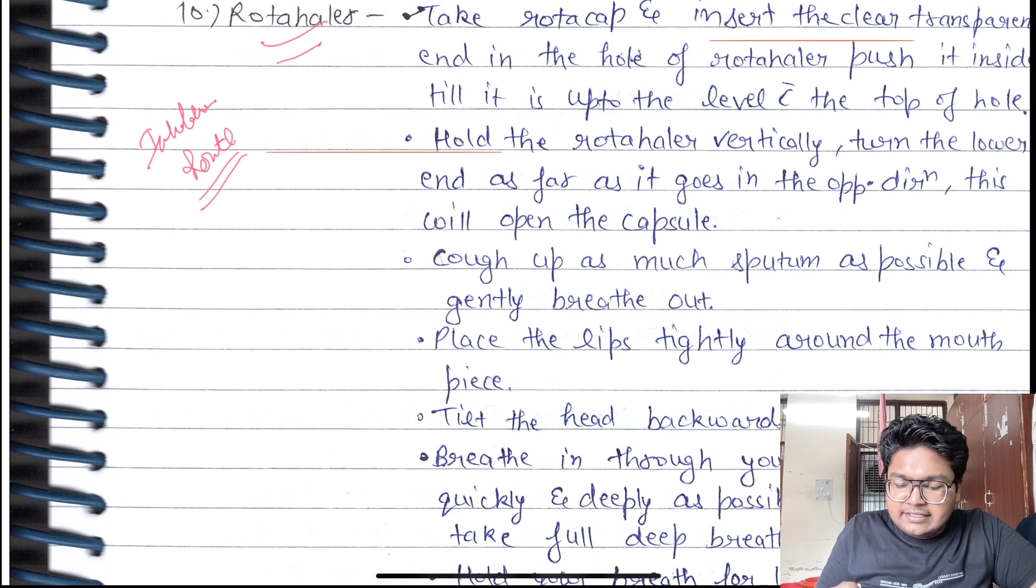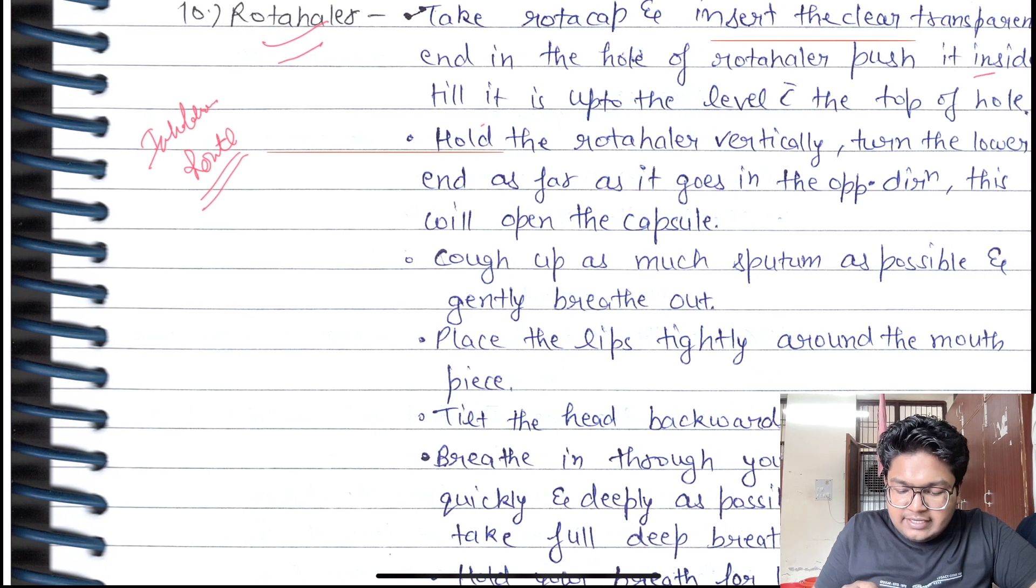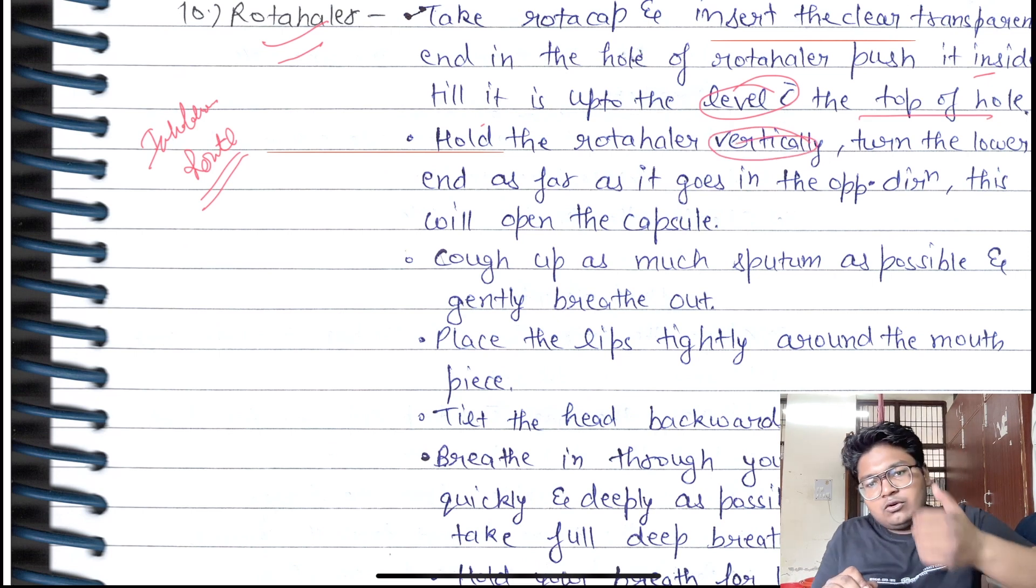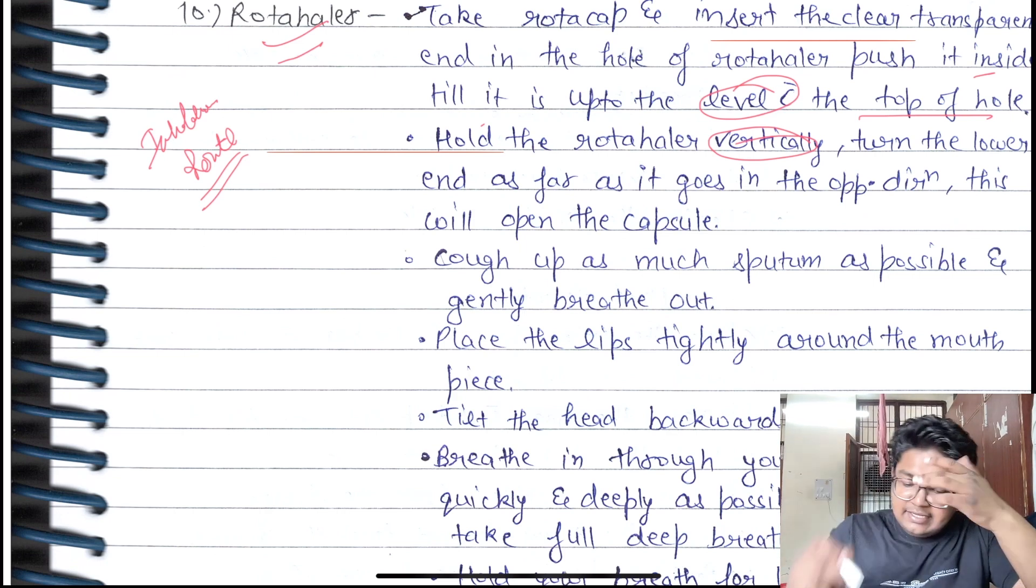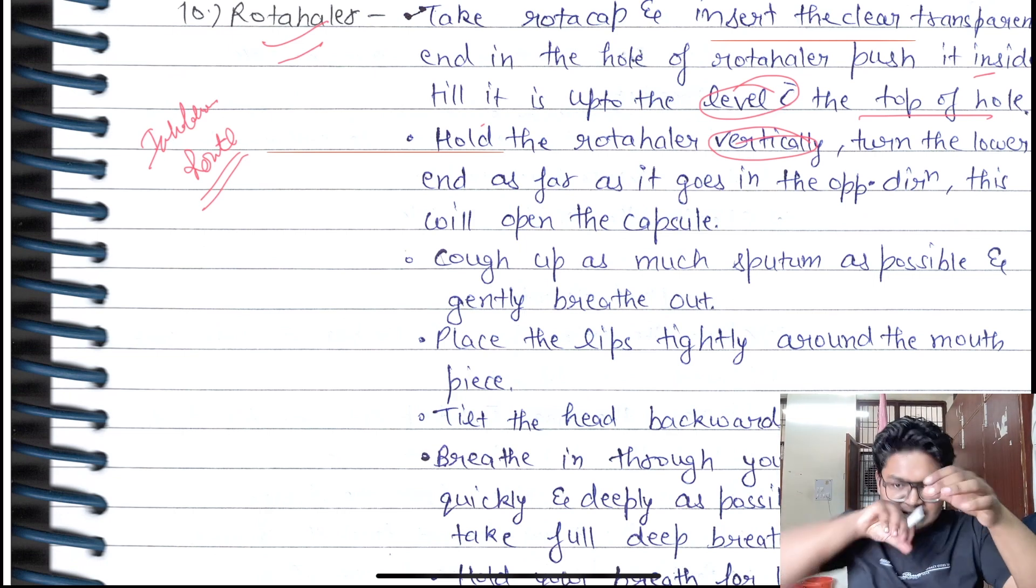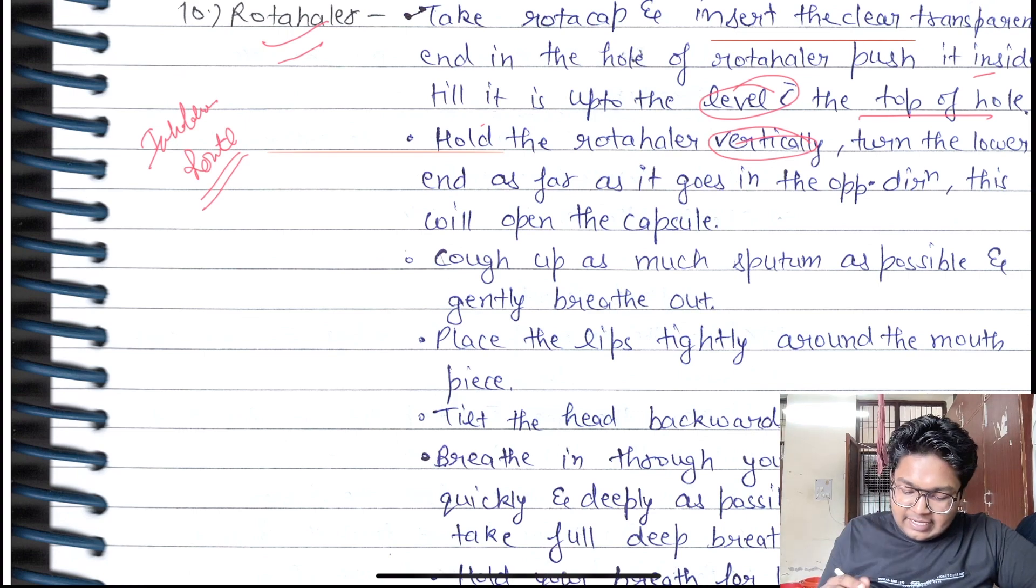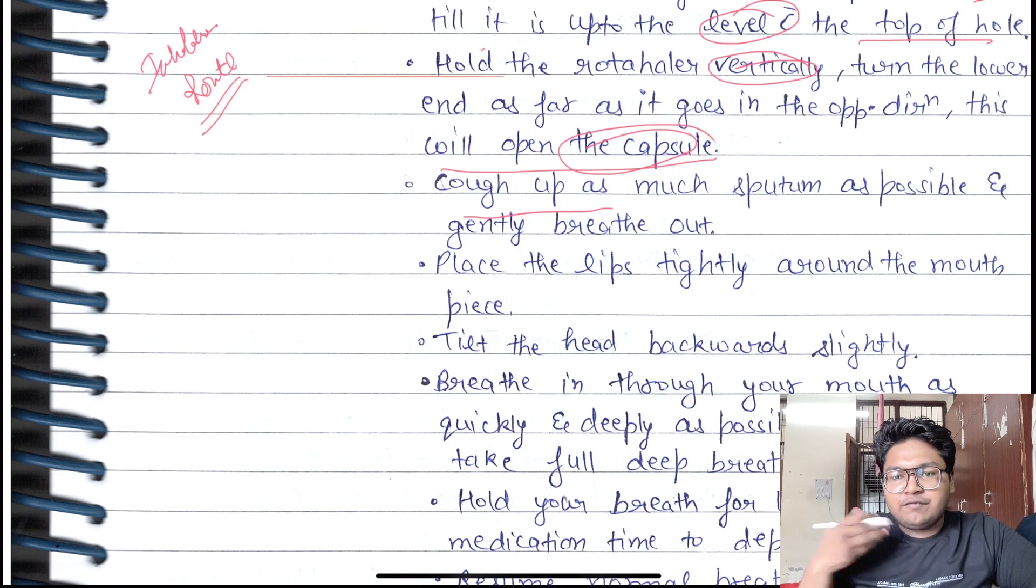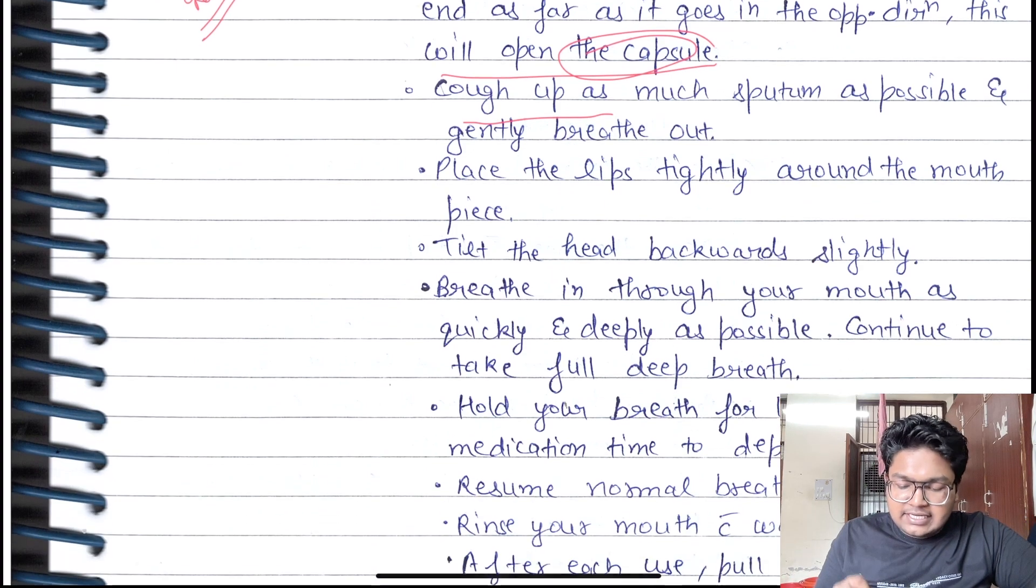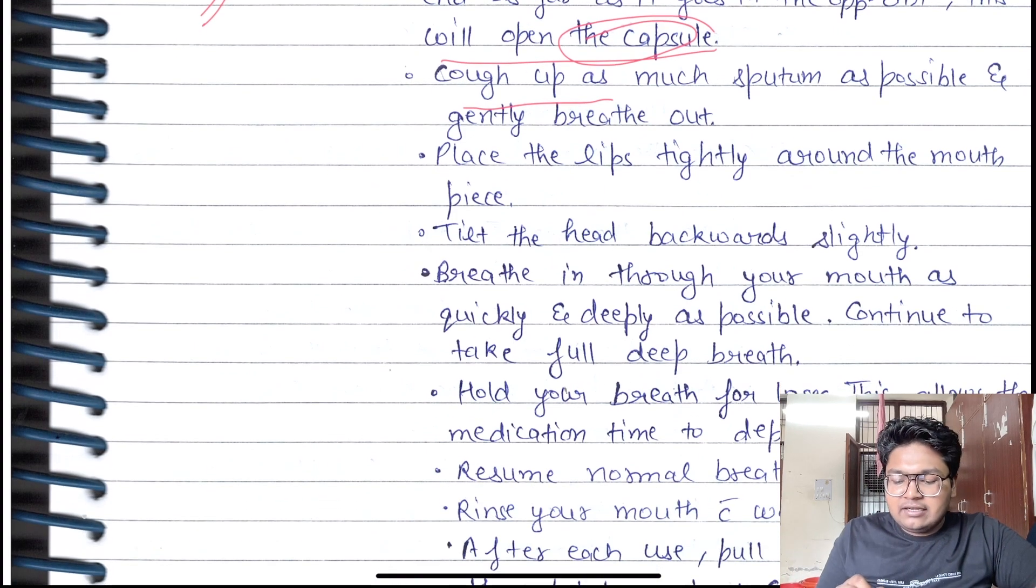Push it inside till it is up to level with the top of the hole. Hold the rotahaler vertically and hold the cap. Then completely press it - the capsule will open. Cough as much as possible. First of all, cough and clear the passages. Gently breathe out, place the lips tightly around the mouthpiece.